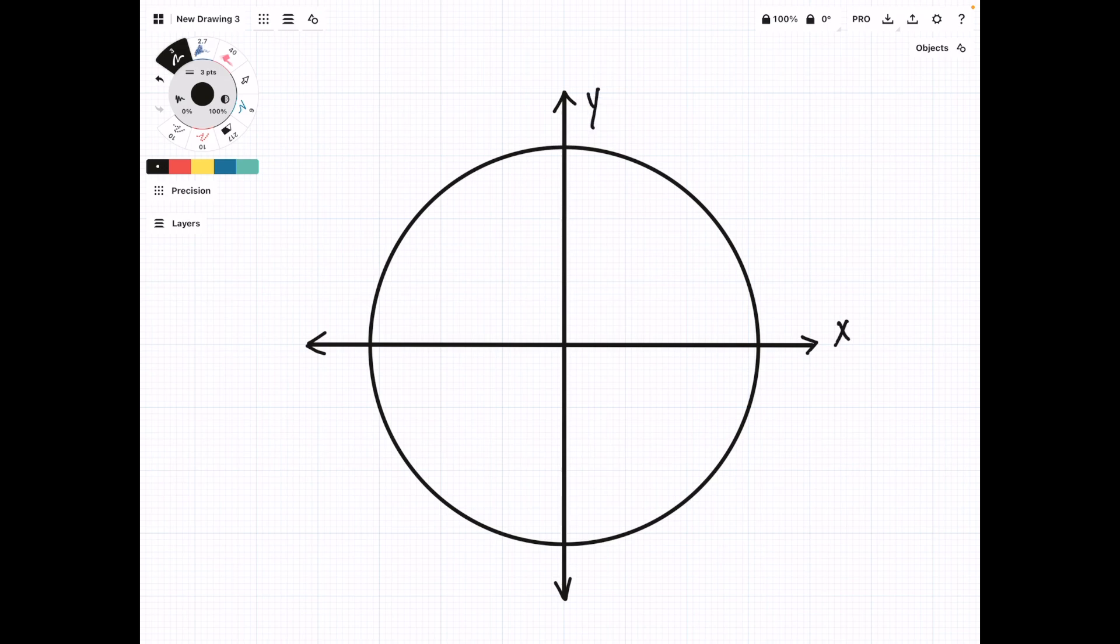The quadrants are simply going to tell us where we are relative to these two axes. So in the top right, we have quadrant 1, top left is quadrant 2, bottom left is quadrant 3, and bottom right is quadrant 4.